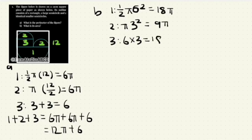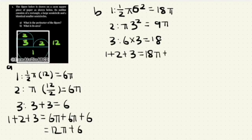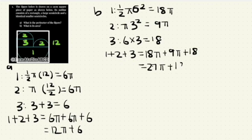So 1 plus 2 plus 3 will give us, it should be 18π first. So 18π plus 9π plus 18. This will give us 27π plus 18. Do you get this answer? So this is the answer for part B. This is the answer for part A.